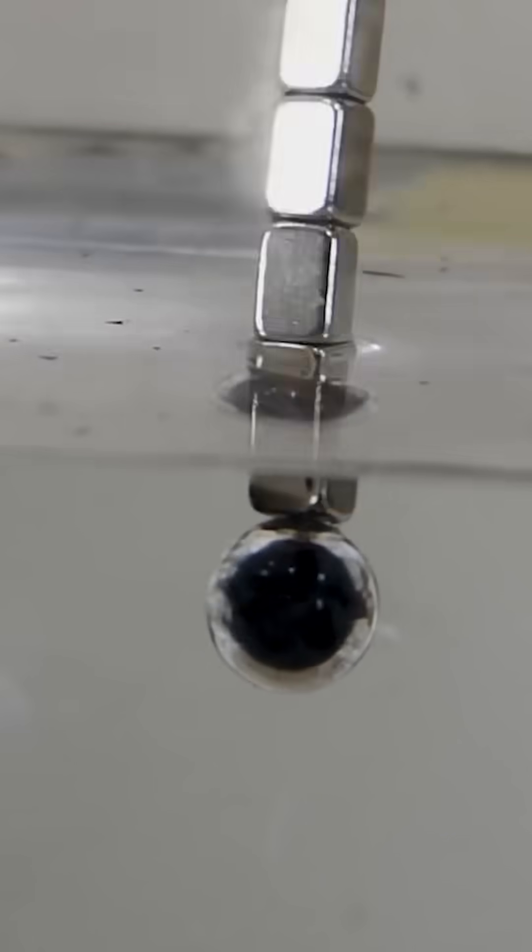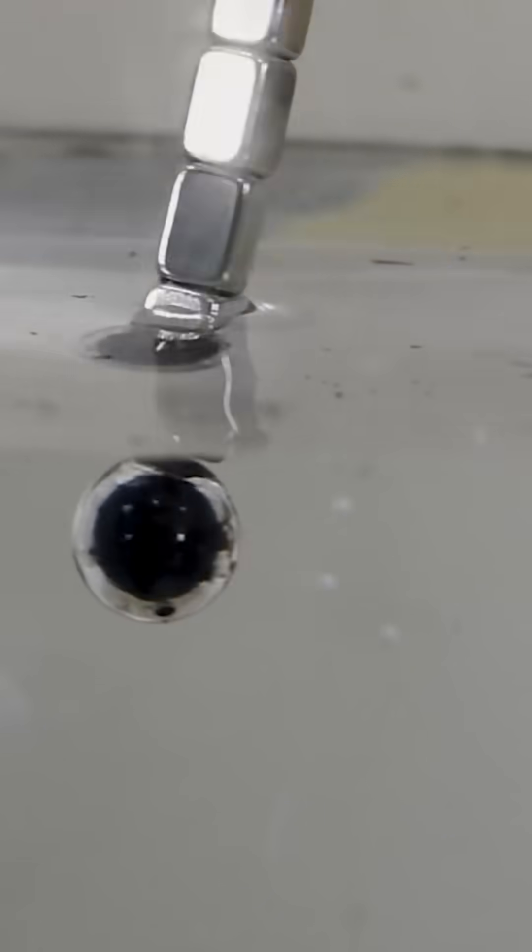If I coat a sphere with it, this is what it looks like. Above the water it's completely black, then dip it under. Now that is the thin layer of air around it.